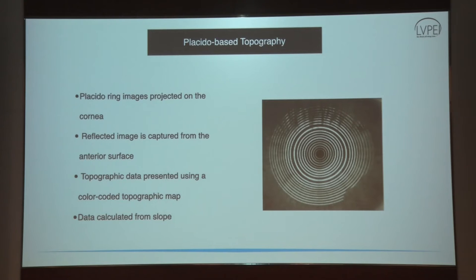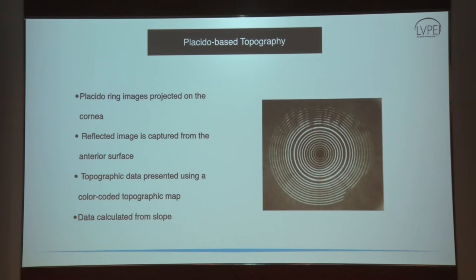In Placido-based topography, Placido rings are projected on the anterior surface of the cornea and the reflected image is captured from the tear film. Topographic data is calculated from the distance between the rings and is then represented in the form of a color-coded image.